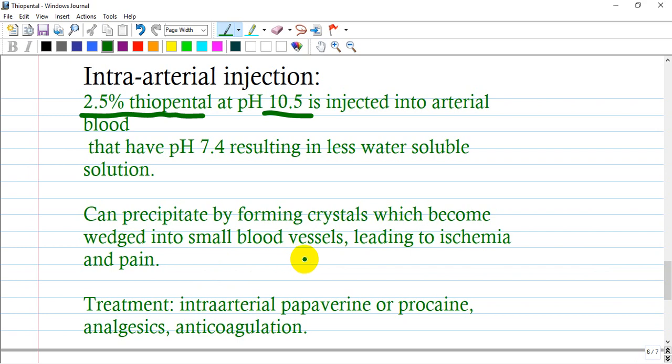One of the signs will be irresistible pain. The treatment is to introduce through the same intra-arterial cannula papaverine or procaine (a local anesthetic), analgesics, and anticoagulants.